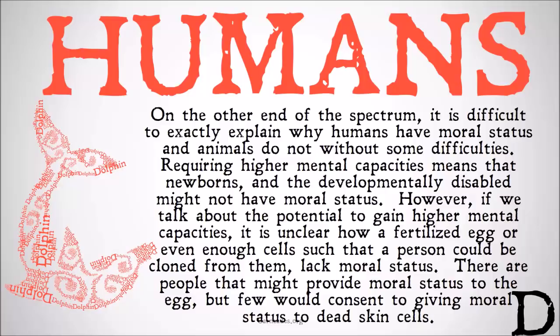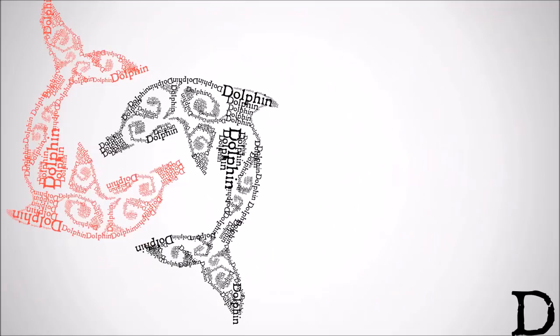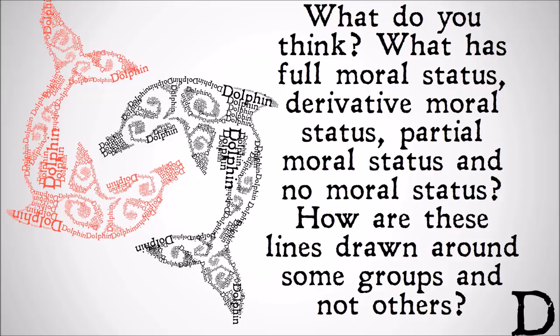What do you think? What has full moral status, derivative moral status, partial moral status, and no moral status? How are these lines drawn around some groups and not others? Watch this video and more here at carneades.org and stay skeptical, everybody.